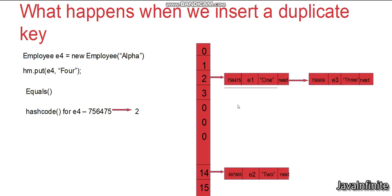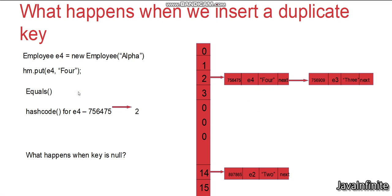Since the hash codes match, HashMap now uses the equals method — it compares the stored key e1 with the inserting key e4. Since both objects have the same value alpha, e1.equals(e4) returns true. In this case, the value of e1 is replaced by e4 and the value 1 is replaced by 4. When inserting a duplicate key, the old key and value are replaced by the new ones. Additionally, since HashMap accepts one null key, the null key is always stored in bucket 0.